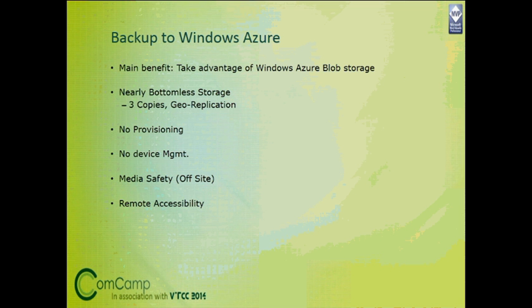Let me reset the environment. Now we are creating a database called customer_history with two data files and one log file. Both files are the same size — 5 MB each. I am changing the recovery model explicitly to full. If you're not changing it, it will pick up the recovery model from your model database.